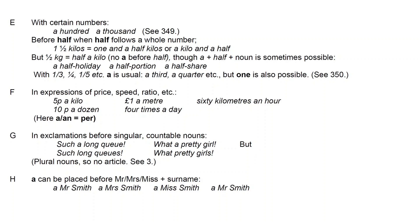Also in expressions of price, speed, and ratio, A or AN work in the same way that the word 'per' does. Five pence a kilo is the same as five pence per kilo. Sixty kilometres an hour is the same as sixty kilometres per hour.